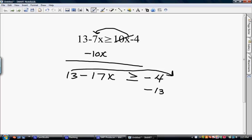And I end up with negative 17, my inequality symbol, and a negative 17x on the left hand side. Now in order to get my x by itself, I'm going to need to divide both sides by negative 17.